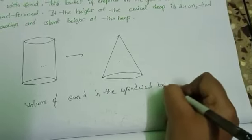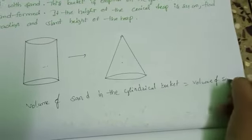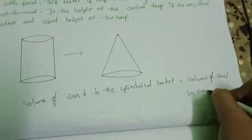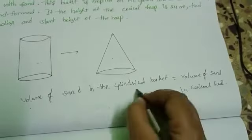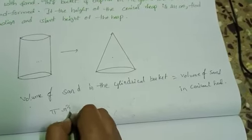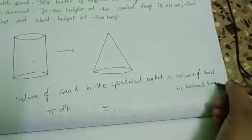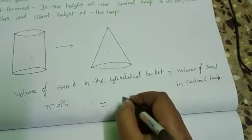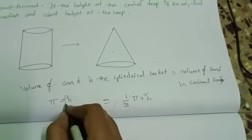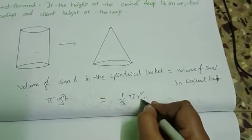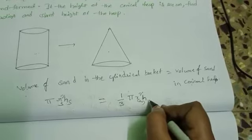Volume of cylinder is pi r square h. Volume of the sand in the conical heap is volume of cone, which is 1 by 3 pi r square h. Here r is radius of the cylinder, here r is radius of the cone. Here h is height of the cylinder, here h is height of the cone.